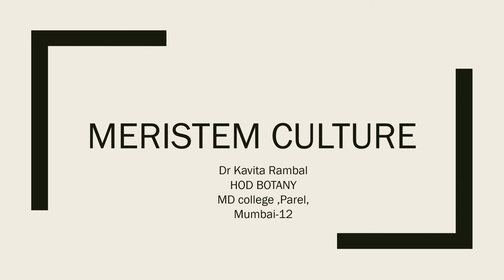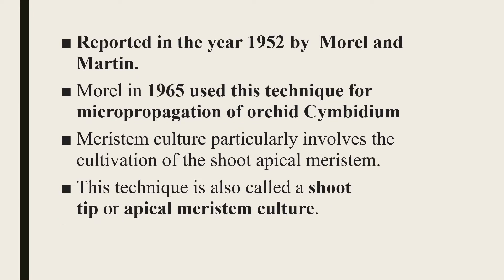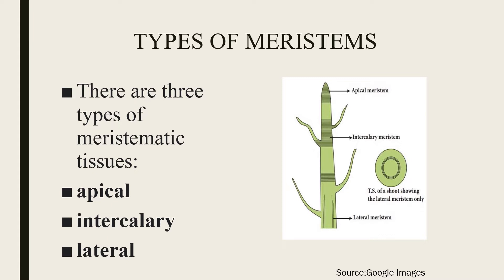Hello students, this is for revision — meristem culture. The definition: it is the tissue culture technique which uses apical meristem with one or two leaf primordia to prepare clones of a plant. This technique primarily involves isolation of meristem by applying a V-shaped cut in the stem. It was first reported in the year 1952 by Morel and Martin, and in 1965 this technique was used for micropropagation of orchid. Meristem culture particularly involves cultivation of the shoot apical meristem, and this technique is also called shoot tip culture or apical meristem culture.